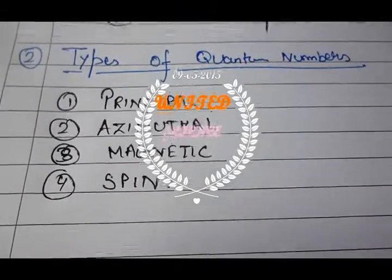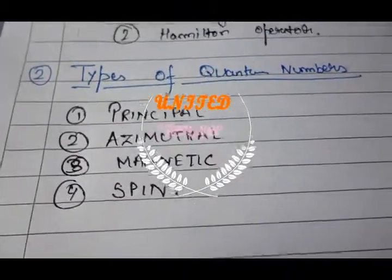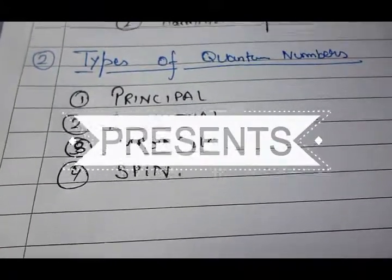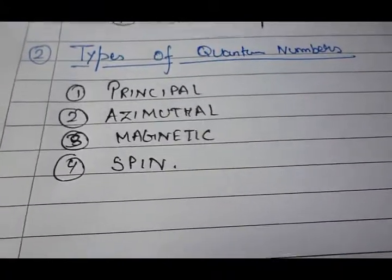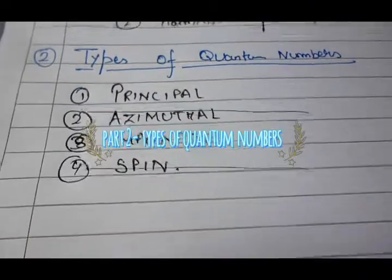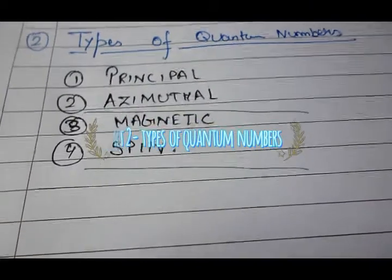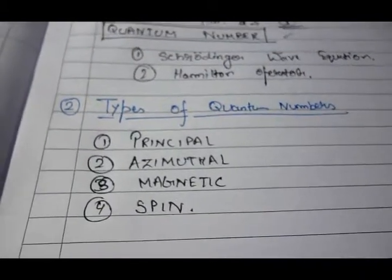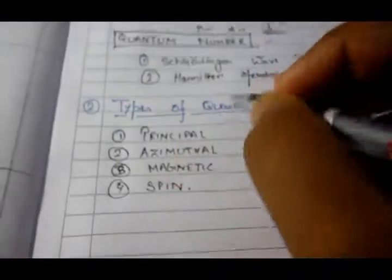The next part is the types of quantum numbers. These are some age-old methods and they are named as follows. The principal quantum numbers, the azimuthal quantum numbers, the magnetic quantum number and the spin quantum numbers.